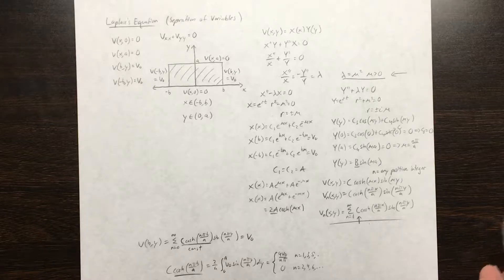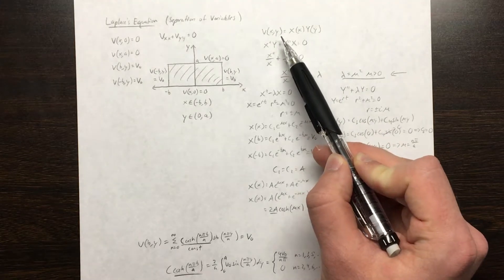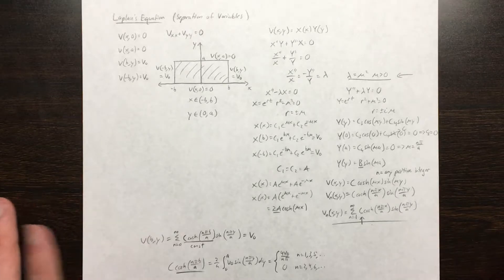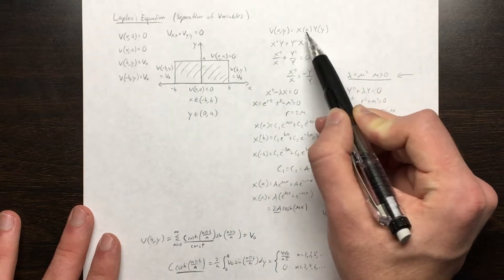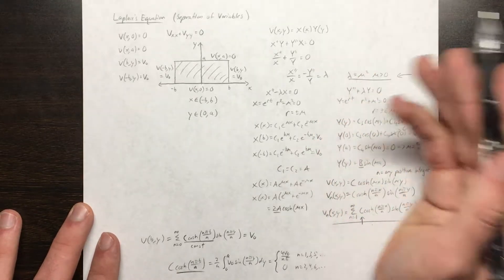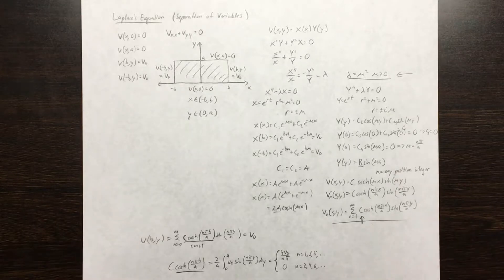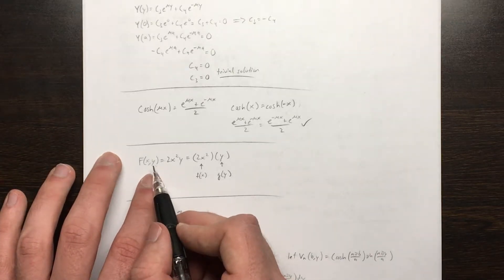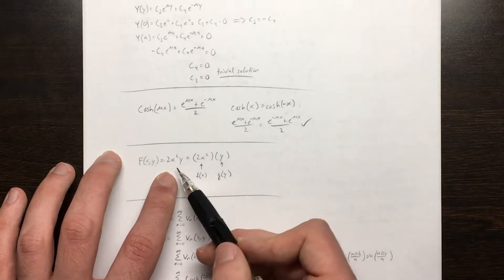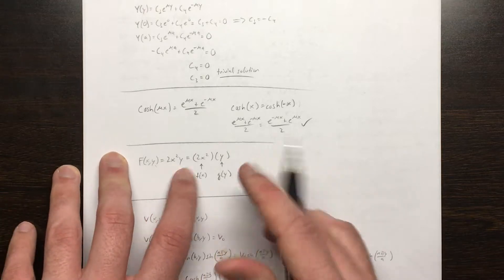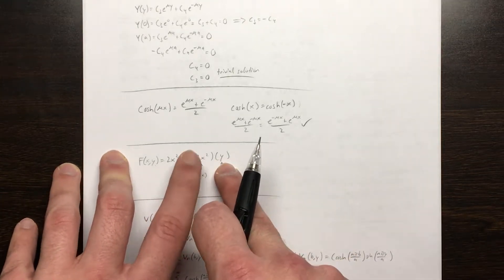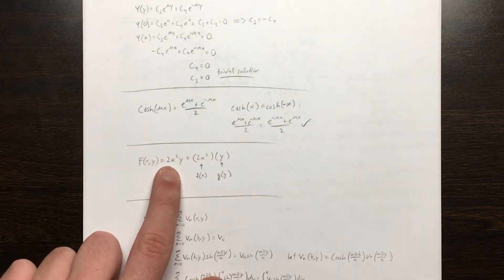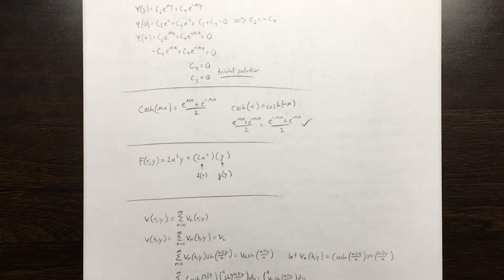The separation of variables method assumes that our potential v(x,y) is of the form where x and y are the independent variables. We're going to separate v(x,y) into two functions multiplied together, where each is a function of one of the independent variables. For example, f(x,y) = 2x² times y can be factored into a function of x and a function of y multiplied together — this function is separable in the form we just described.